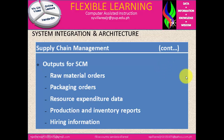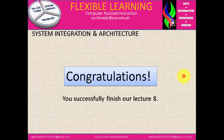The outputs for SCM include: raw materials orders, packaging orders, resource expenditure data, production and inventory reports, and hiring information. That's all for today. Thank you for watching and good luck. Congratulations — you have successfully finished lecture number 8.